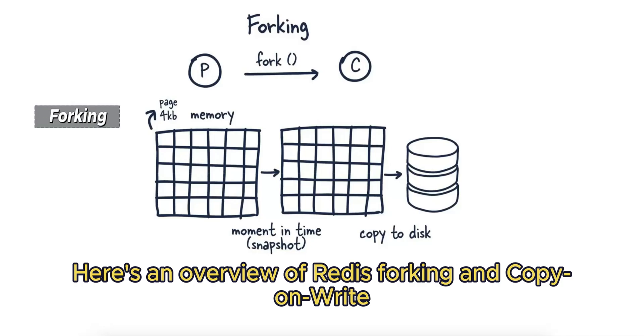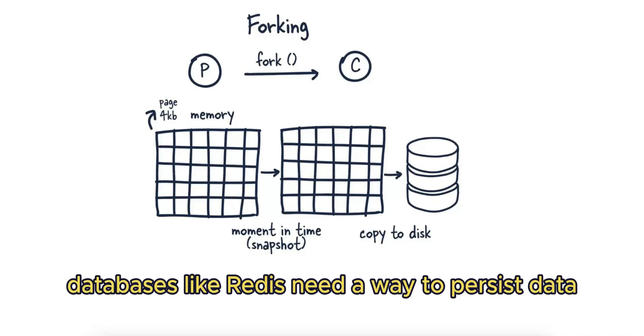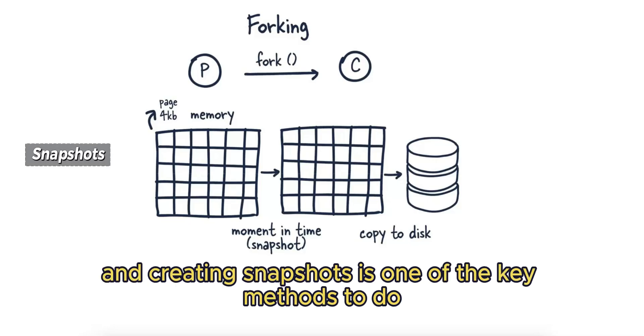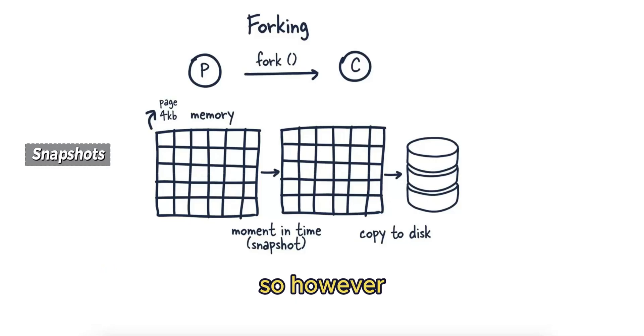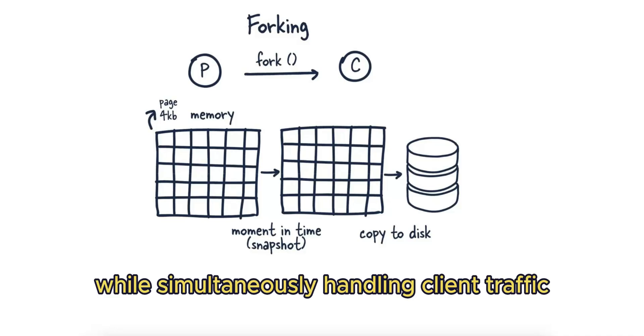Here's an overview of Redis forking and copy-on-write for data persistence. In-memory databases like Redis need a way to persist data without blocking client requests, and creating snapshots is one of the key methods to do so. However, capturing a snapshot of memory, potentially gigabytes in size, while simultaneously handling client traffic poses a challenge.